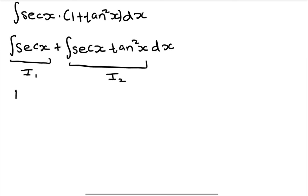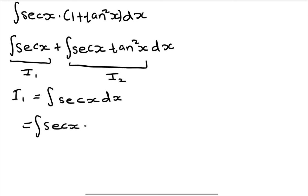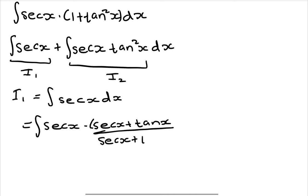We start with the first one, which is the integral of sec(x) dx. In this integral, what we do is multiply the numerator and the denominator by sec(x) plus tan(x).